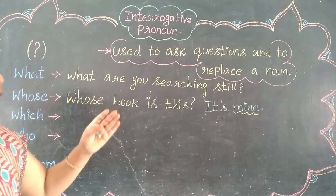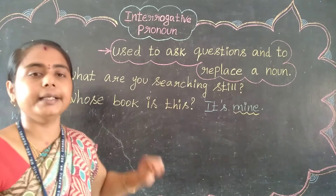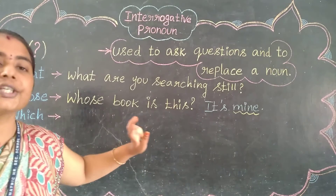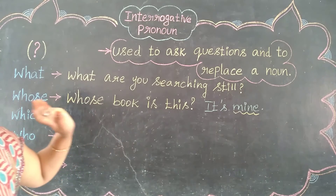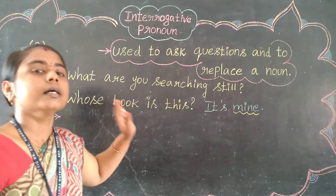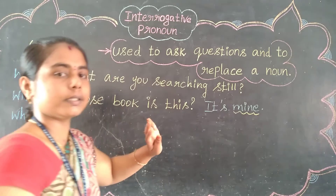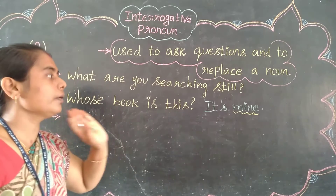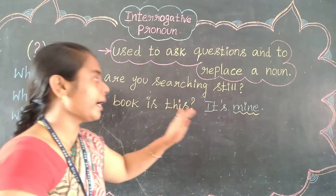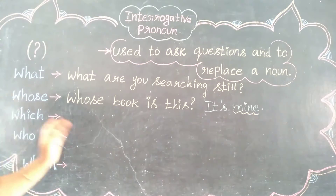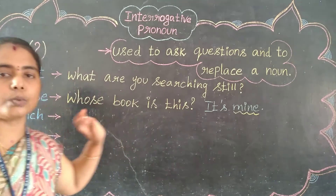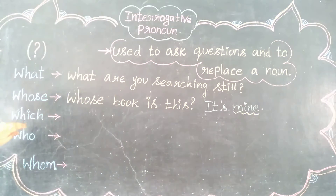In the possessive case, we use 'mine.' So here it is showing ownership — owning a thing or a person. It indicates a relationship of ownership. So 'Whose book is this? It's mine.' This is a possessive pronoun.